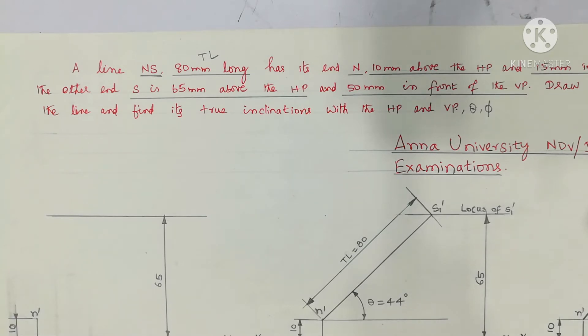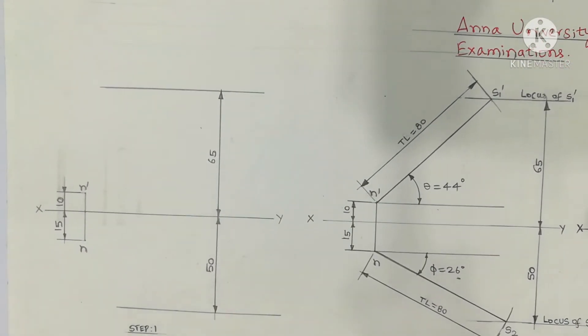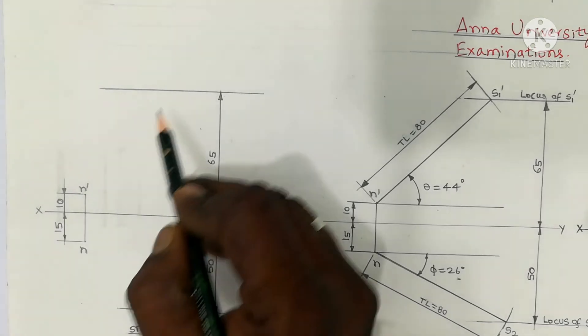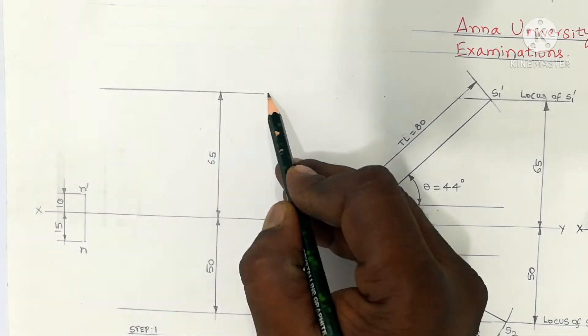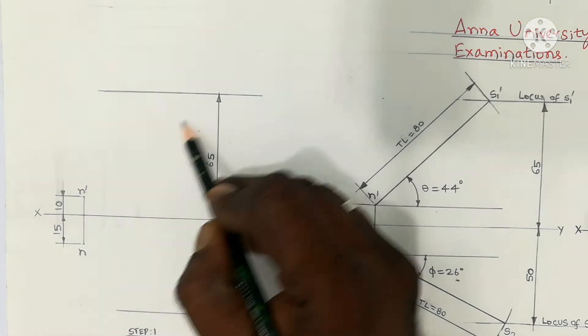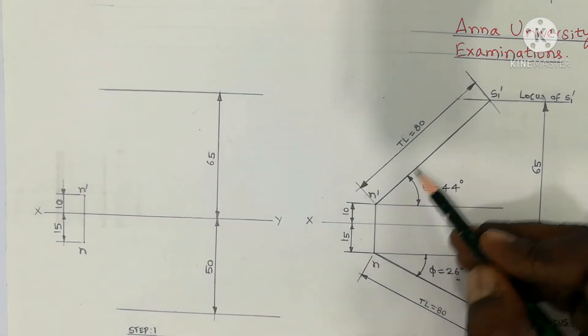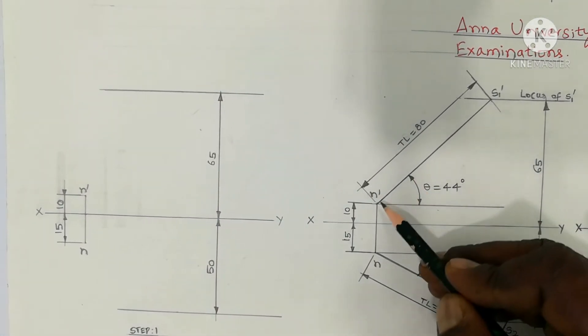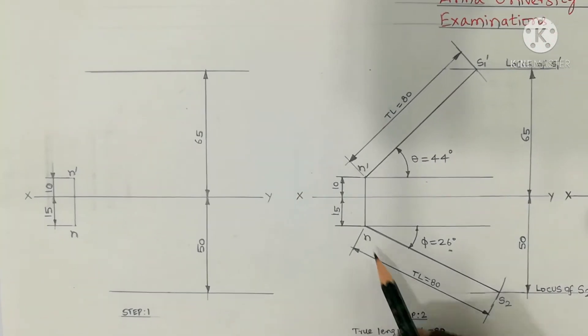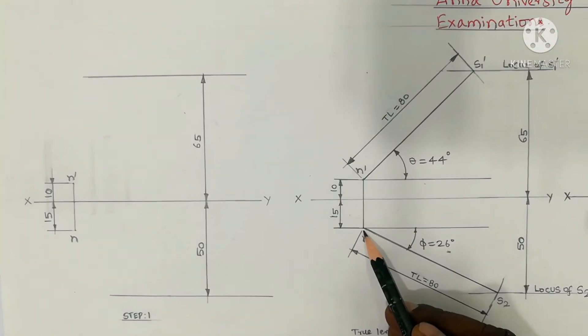So number one, using compass, N dash as the center of your compass, take 80mm in your compass. In the height 65mm above the HP, in the line, cut the length as true length. That is N dash S1 dash. This is true length of the line, the same length. True length is taken in the compass. So compass with N dash as center, draw your arc.